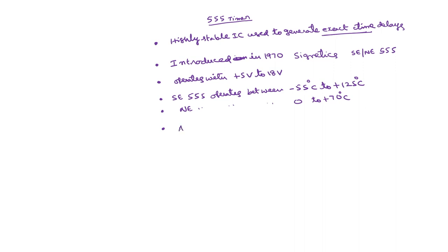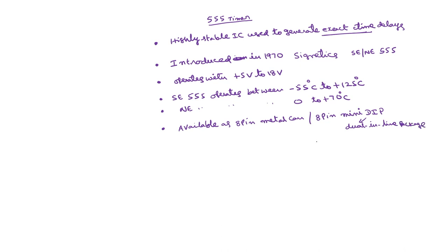This is available as an 8-pin metal can in round shape or an 8-pin mini DIP. DIP stands for dual inline package, meaning half of the pins will be on one side and half on the other side. There is a dot here from which it starts — pin number 1, 2, 3, 4, then 5, 6, 7, 8. This is the ordering of the pins.